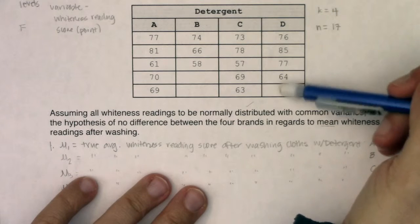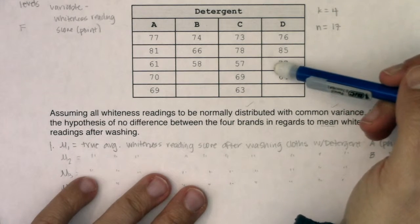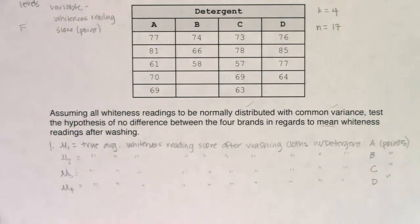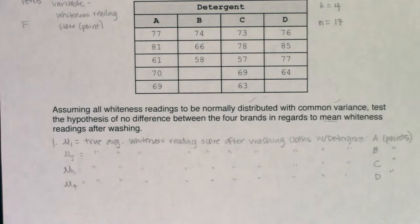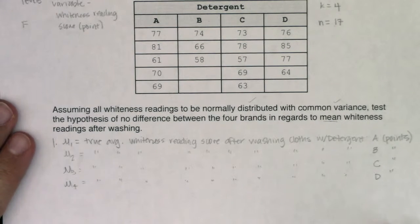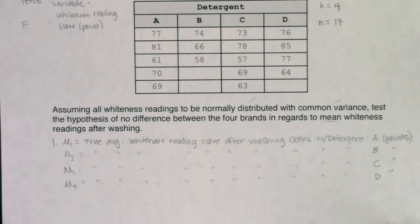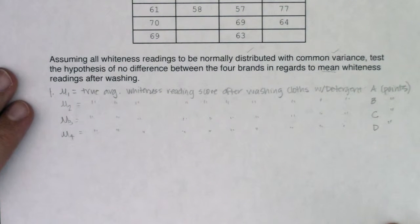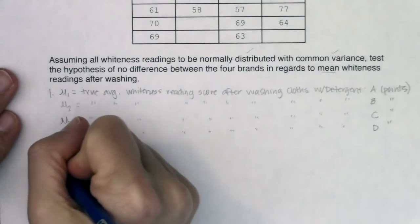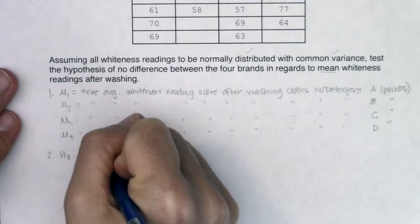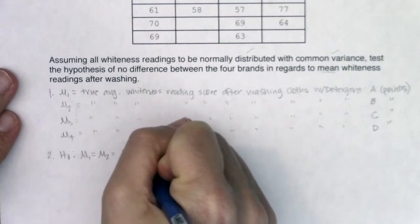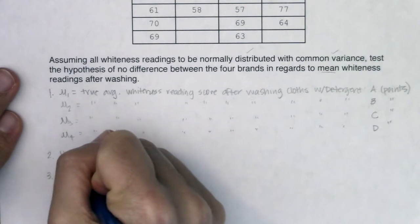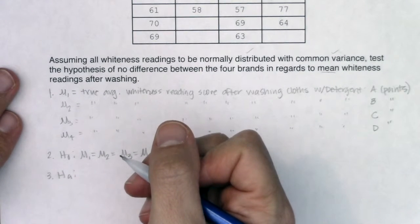We're going to run this hypothesis test and see if equality of means is true or if we have evidence for the alternate. A, B, and C look close — unlike example one where one light bulb brand looked significantly better just on sight. This one's harder to tell, which is why we run the test. Step two: the null hypothesis is that all four means are equal — no detergent is better than the others on average.